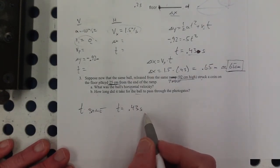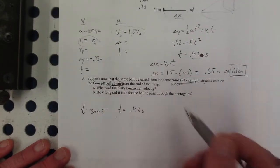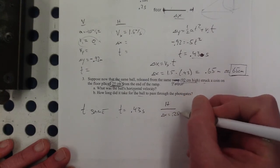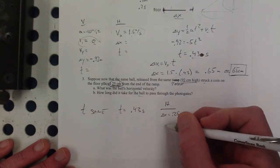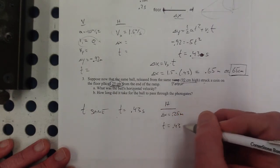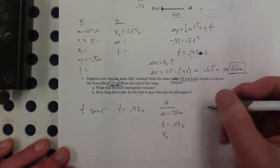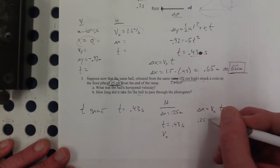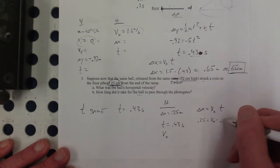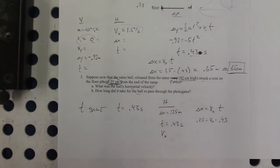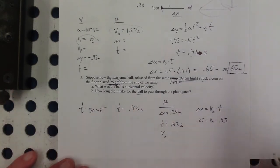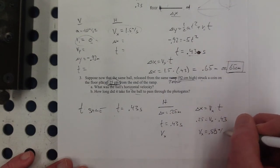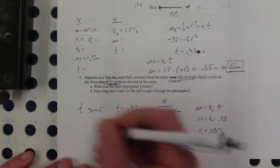So that time is 0.43 seconds, and the delta x is 0.25 meters, then what's the vx? Well, there's only one equation for the horizontal side. Delta x is vx times t. So I'm going to divide. That's 0.58. So that's the answer for A. What was the ball's horizontal velocity?